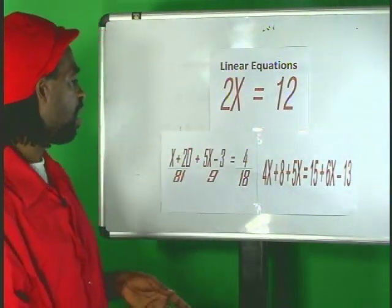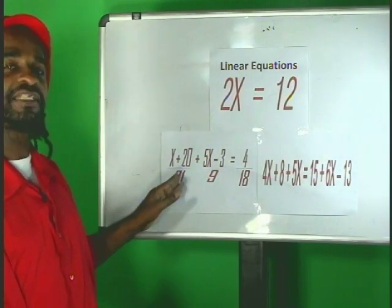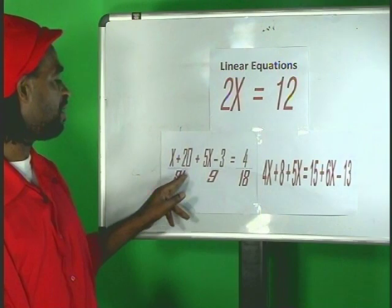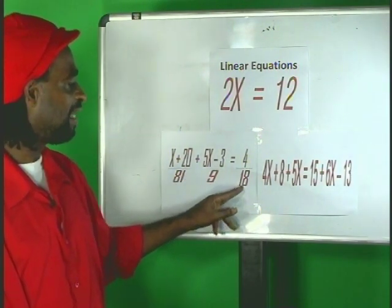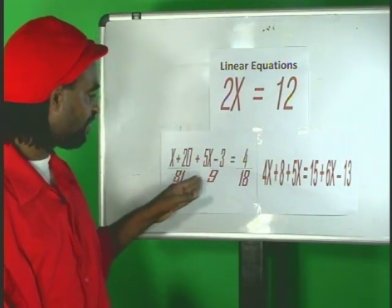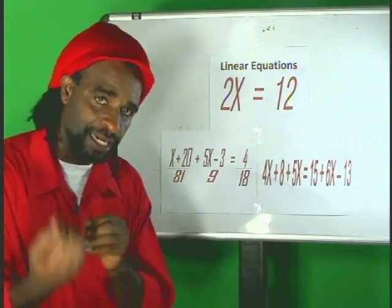In the third example here, there are denominators. The denominators are 81, 9 and 18. In order to solve this linear equation, we must get rid of the denominators by finding the LCM.